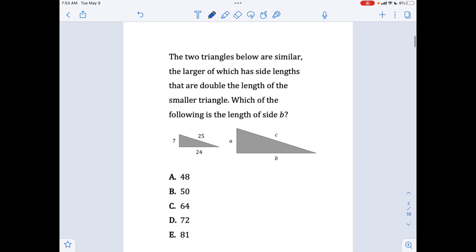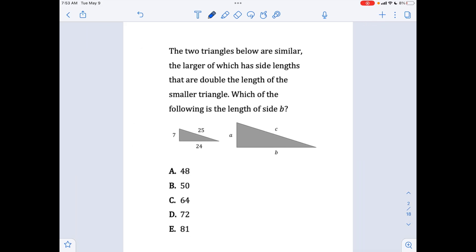Moving on, next problem type is about similar and special right triangles. The two triangles below are similar, the larger of which has side lengths that are double the length of the smaller triangle. So which of the following is the length of side b? The way these type of problems work is you'll be given two triangles and essentially the only difference is one is going to be a scaled up version of the other. So you're just going to take the corresponding side and double it. So it's pretty straightforward.